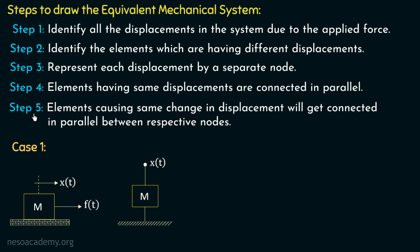Step number five states that elements causing the same change in displacement will get connected in parallel between respective nodes. But since we have only one displacement, we don't need to apply step five either, and this is our complete equivalent mechanical system.